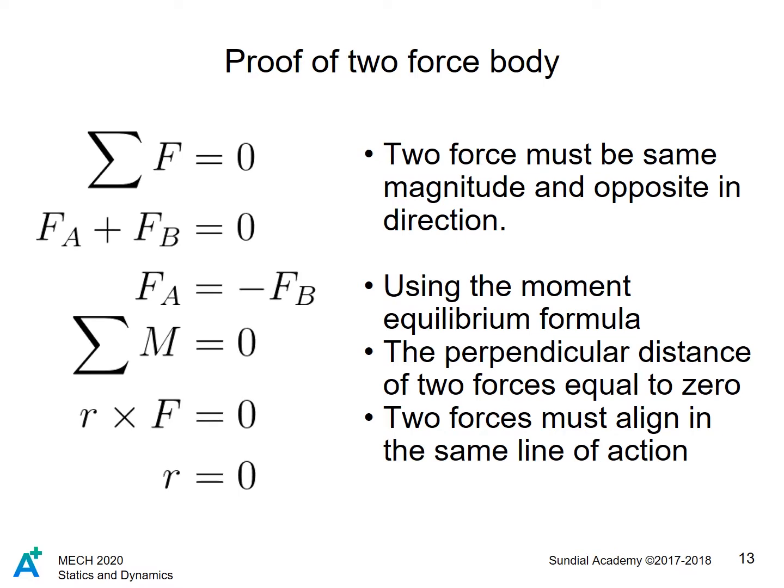Here is a simple proof of this concept. As the summation of force must be zero, two forces must be in same magnitude and opposite direction by mathematics. From the summation of moments, the perpendicular distance of two forces equal to zero, so that they do not form a force couple. Therefore, the two forces must align in the same line of action.